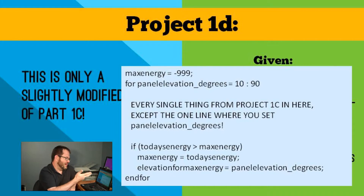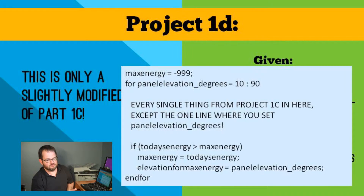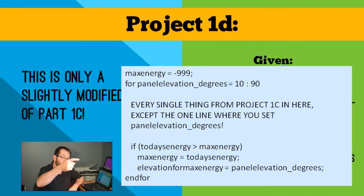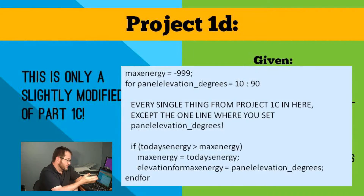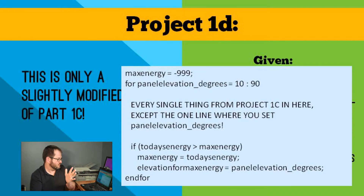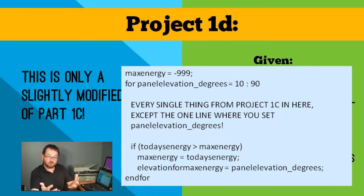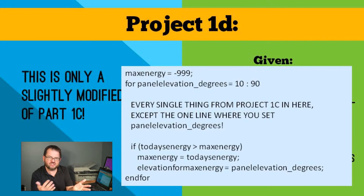I'm going to start off with a crap value in there — even having the panel pointing at just 10 degrees above the horizon, we're going to get more than negative 999 joules per square meter. Worst case scenario we're going to get zero energy. So we're going to compute for that day at that elevation angle the total amount of energy. We'll compute it for every minute and then integrate it to get the total energy at that angle. If that's more than the maximum amount of energy we've seen so far, set the maximum amount of energy to this one, and also set a variable — I called it elevation for maximum energy — to the panel's elevation in degrees. Then end the for loop and do it for the next angle.